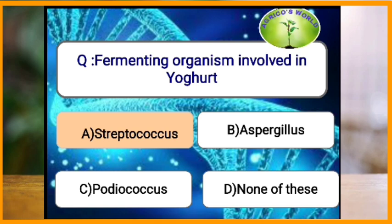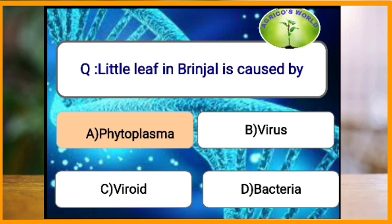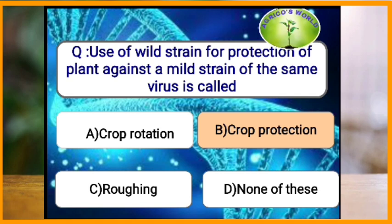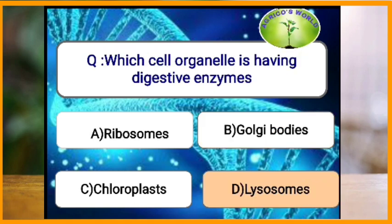The fermenting organism involved in yogurt is Streptococcus lactis. Little leaf of brinjal is caused by phytoplasma and is transmitted by the leafhopper Hishimonas phycitis. The use of a wild strain for the protection of a plant against a mild strain of the same virus is called cross protection, and it is used for citrus tristeza virus.